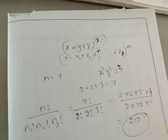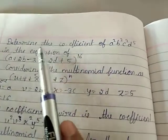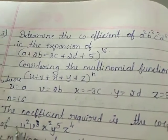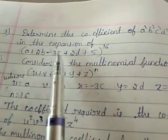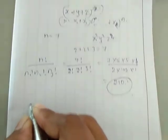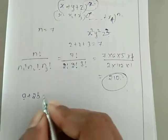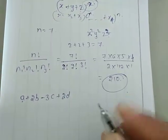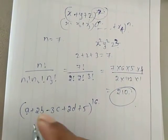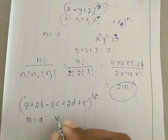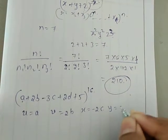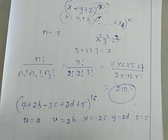One more example on the same topic: determine the coefficient of a^2·b^3·c^2·d^5 in the expansion of (a + 2b - 3c + 2d + 5)^16. We substitute u = a, v = 2b, x = -3c, y = 2d, z = 5, and n = 16, so the expansion becomes (u + v + x + y + z)^16.